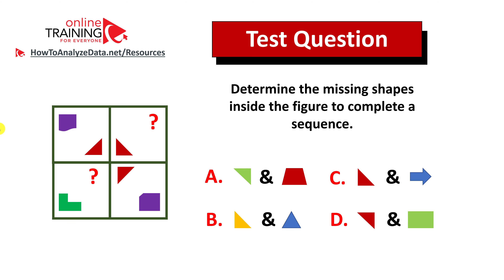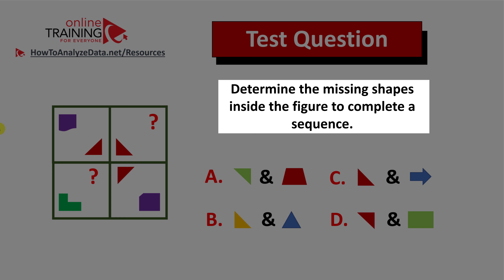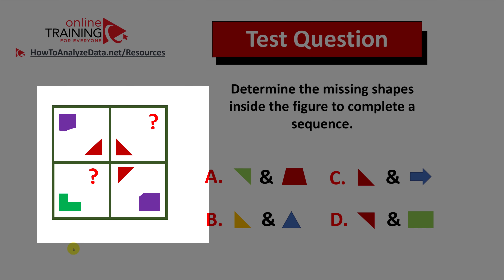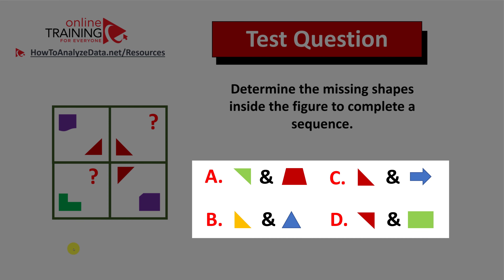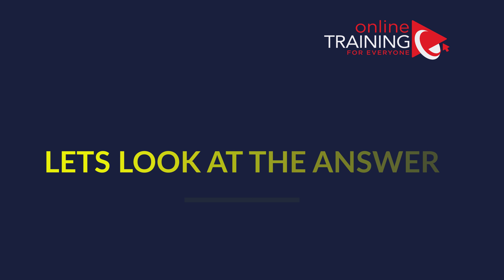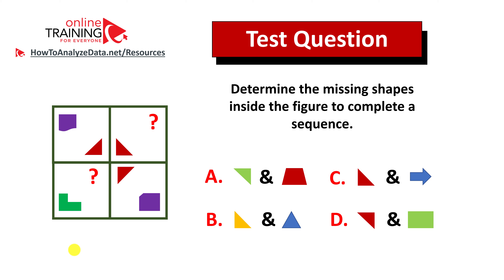Let's look at an interesting question which tests your pattern recognition skills. Determine the missing shapes inside the figure to complete the sequence. You're presented with a two by two figure with two missing shapes and four possible choices — A, B, C, and D. Pause the video and give yourself 10 to 20 seconds to see if you can come up with the solution on your own.